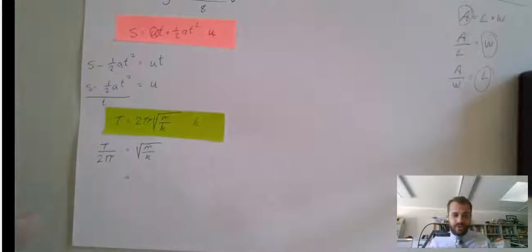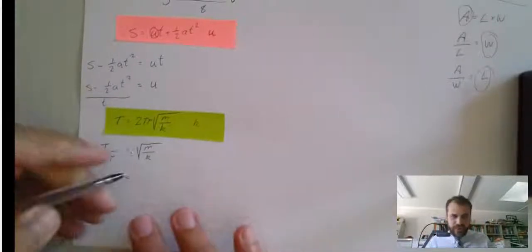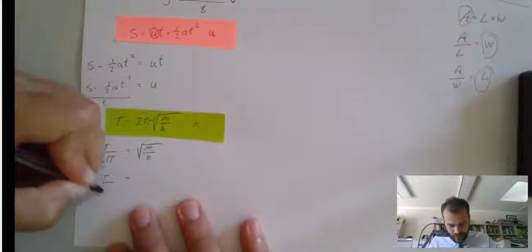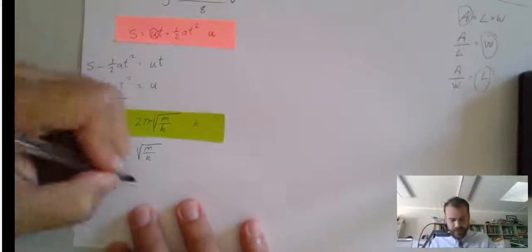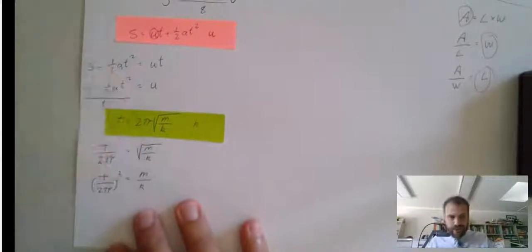Now I need to do the opposite of a square root, which is squared. So, t over 2 pi squared equals m over k.